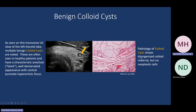A benign colloid cyst is the first thing we're going to talk about. Just like in our renal talk, a cyst is going to be anechoic with a thin imperceptible wall. But with colloid, you often get this echogenic comet tail artifact with some inspissated colloid in there creating that artifact. This is a benign finding — this is a do-not-touch lesion.